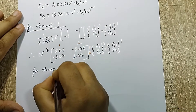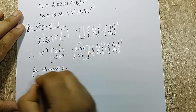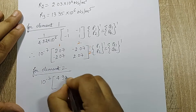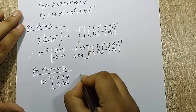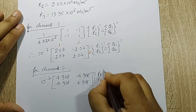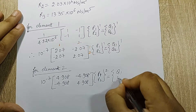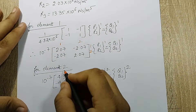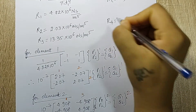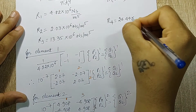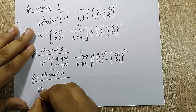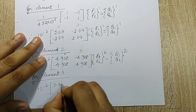For element 2 (nodes 1–3), the value is 10⁻⁷ × 4.908 × [1, −1; −1, 1]. The R4 value is 24.44×10⁶ N·s/m⁵. For element 3 (nodes 2–4), the value is 10⁻⁷ × 0.749 × [1, −1; −1, 1].